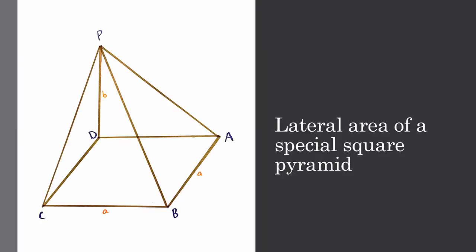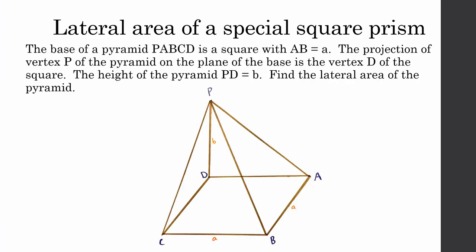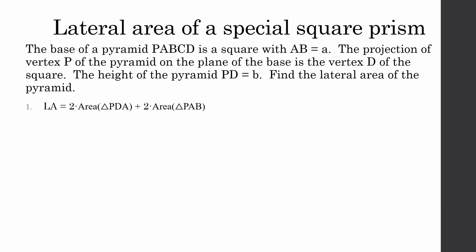Lastly, we will use the theorem about three perpendiculars to determine the lateral area of a special square pyramid. The base of pyramid P, A, B, C, D is a square with AB equal to A. The projection of vertex P onto the plane of the base is the vertex D of the square. The height of the pyramid PD equals B. The lateral area can be found using two times the area of triangle PDA plus two times the area of triangle PAB. This is because triangle PDA is congruent to triangle PDC by side-angle-side, and triangle PAB is congruent to triangle PCB by side-side-side.